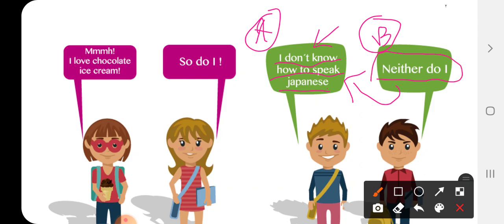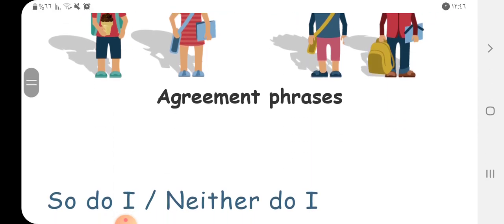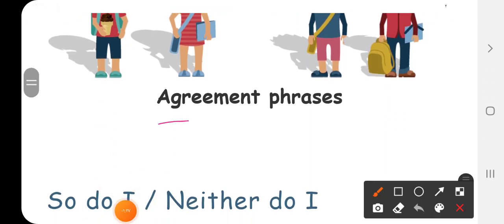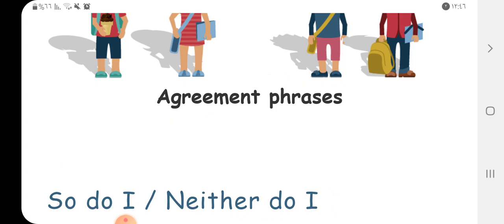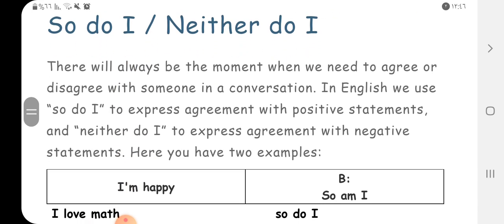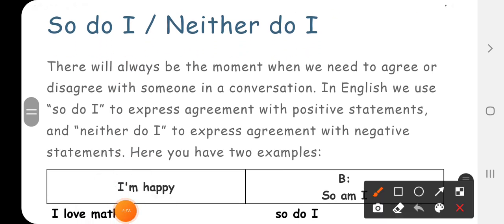Now A said I don't know how to speak Japanese. B, he want to keep agreeing about what did A say. Neither do I. So we use two kind of phrases, so do I, neither do I.